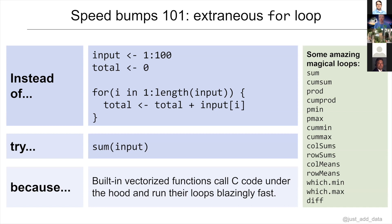There are a ton of really interesting built-in vectorized functions. Not only is there sum returning a single number, but you have cumsum — the cumulative sum. There's prod which is the product, cumprod which iterates and takes the product each time. There are all kinds of built-in functions that are way faster than anything you can accomplish in a for loop. For example, colMeans takes the means of all your columns, rowMeans takes the means of all your rows.